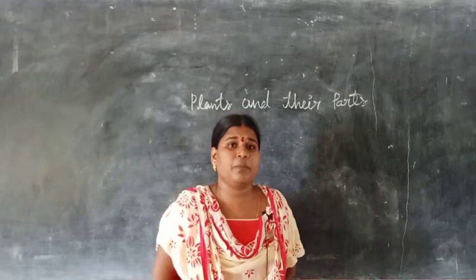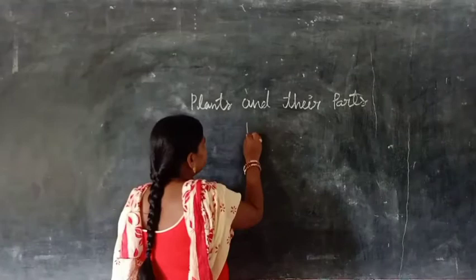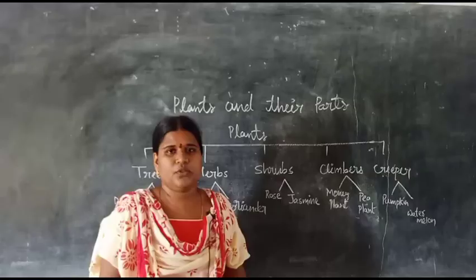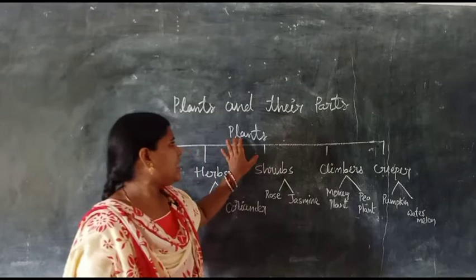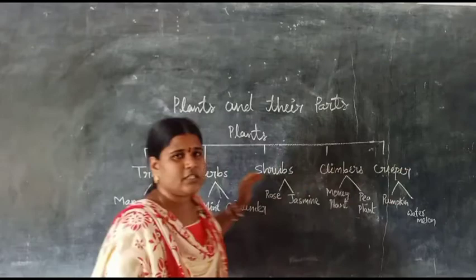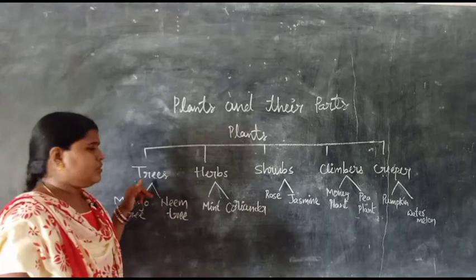Now let us know how many types of plants there are. Plants are in five types: trees, herbs, shrubs, climbers, and creepers. These are the five types of plants.